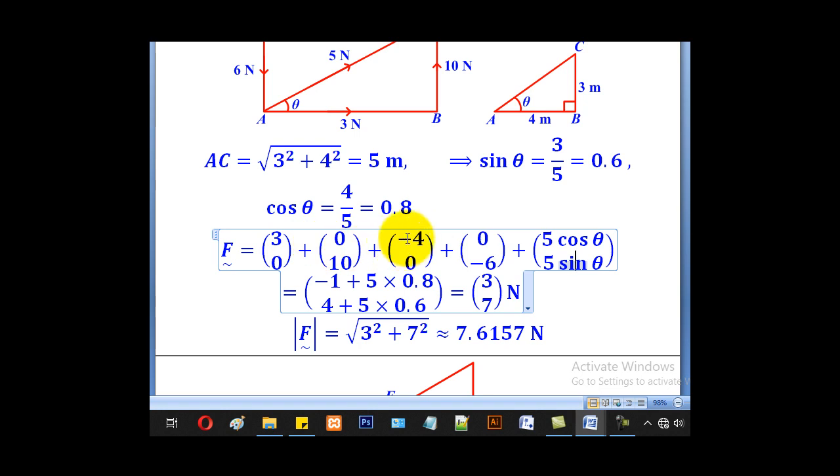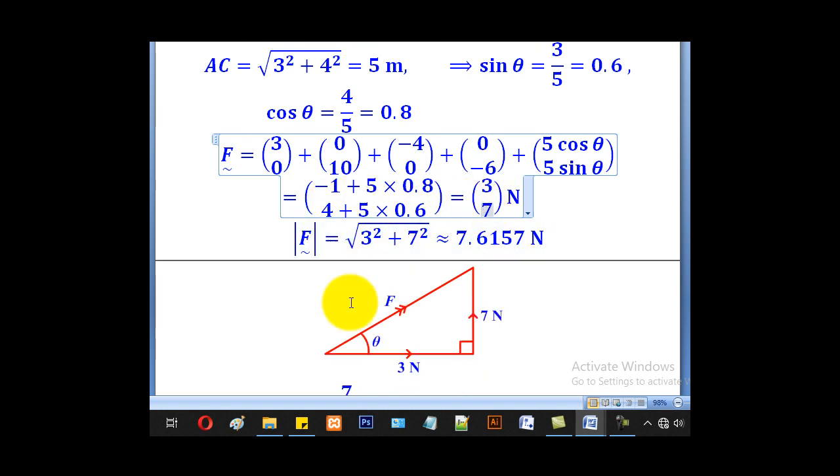When you add all these, 3 + (-4) + 0 gives -1, then plus 5 times cos θ, which is 0.8. For the vertical part, we have 10 - 6 to give 4, then 5 times sin θ, which is 0.6. So when you add this, you shall get 3 for horizontal and 7 for vertical.